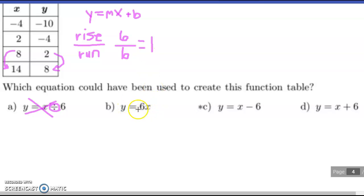So here I have a rate of change of 6, so this one cannot be it. But for C and D, I have a rate of change of 1.